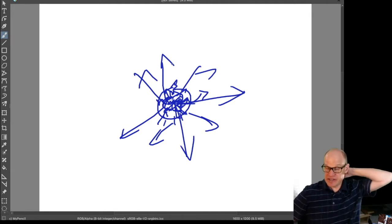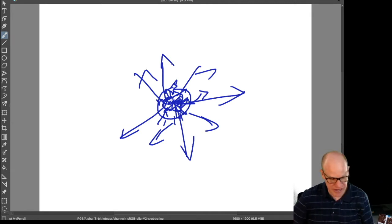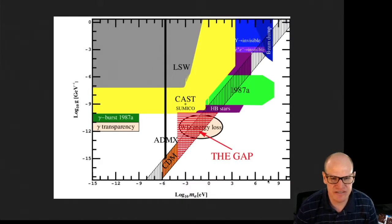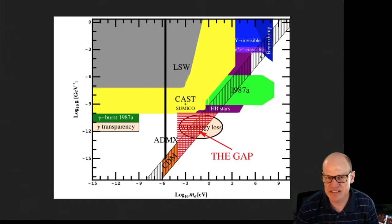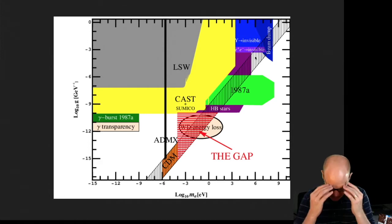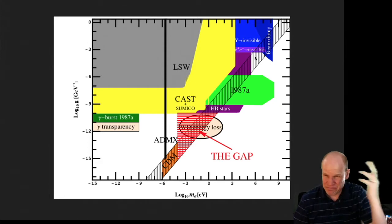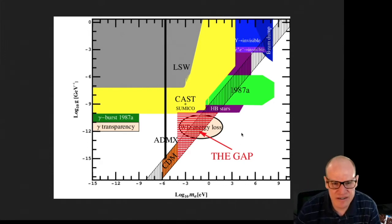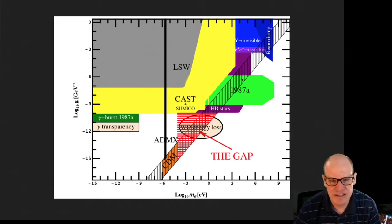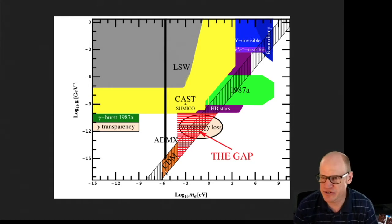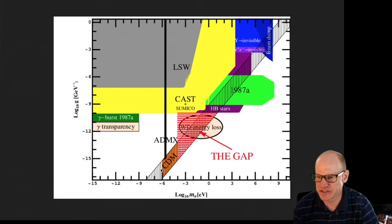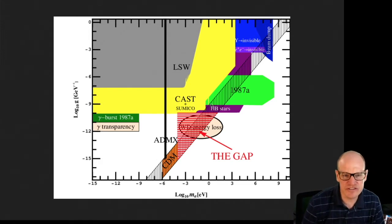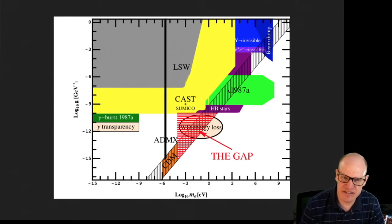The speed that axions move depends on their mass. If an axion is up here at 10^6 — that's MeV scale, similar mass to muons — and an axion with a mass around 0.5 MeV would have the mass of an electron. The more massive they are the slower they move; the less massive they are, the more relativistic they become, eventually behaving like neutrinos. That's what's going on with the supernova 1987a constraint.